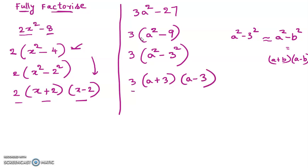These are the factors of the given equation. 3(a² minus 9) is also correct, but if they ask you to fully factorize the equation, then you should go up to 3(a+3)(a-3).